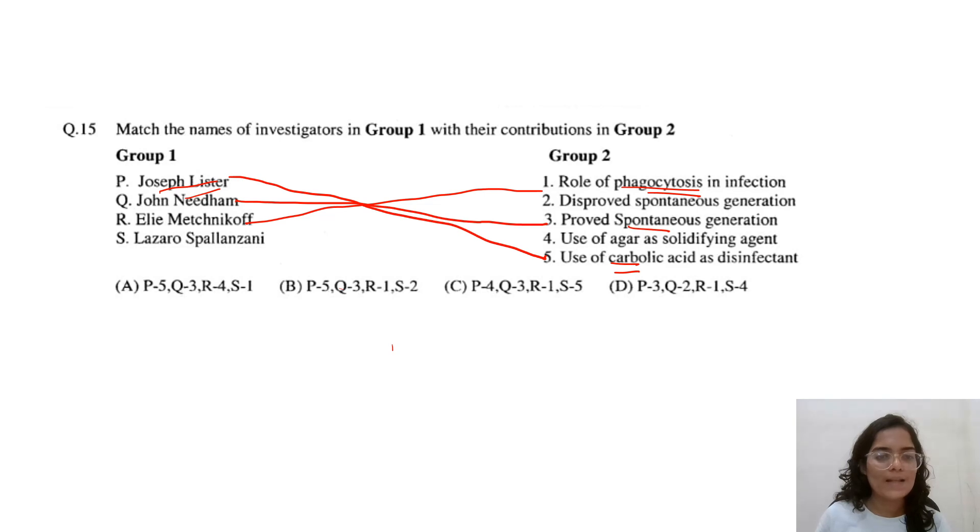And Lazzaro Spallanzani, he disproved the spontaneous generation theory. The option is 5, then 3, 1 and 2. So, 5, 3, 1 and 2. So, answer is option B.